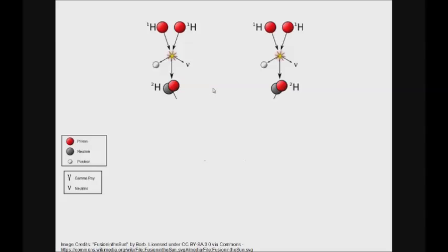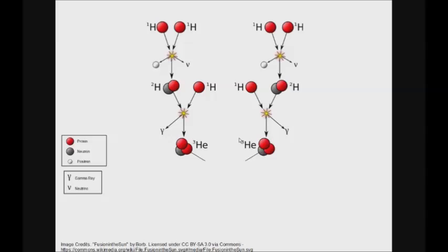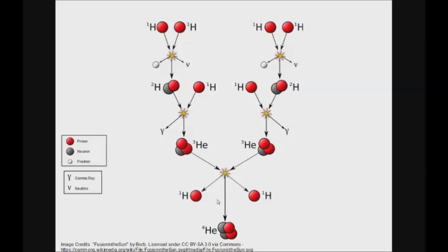In the next step, the two deuterium nuclei will each react with another hydrogen-1 nucleus to form an isotope of helium with two protons and one neutron, called helium-3. This step also releases gamma rays. The final step consists of two helium-3 nuclei reacting to form a helium-4 nucleus and two hydrogen-1 nuclei.